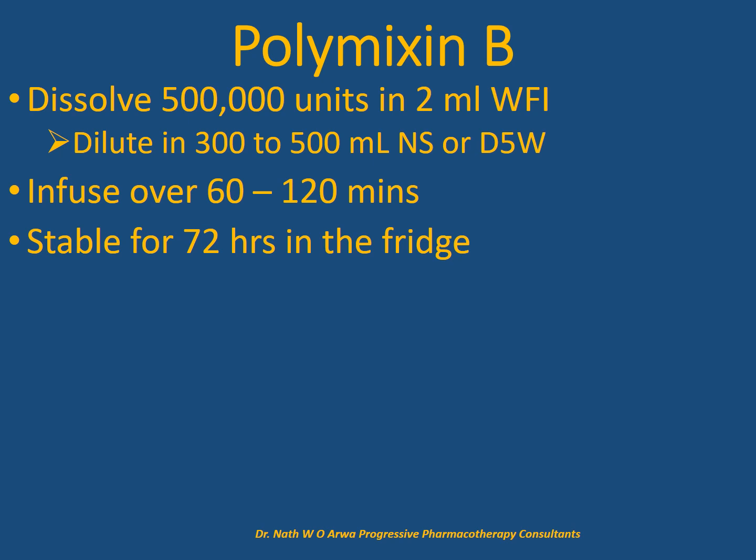For polymyxin B, dissolve 500,000 international units in 2 ml of water for injection, then dilute the prescribed dose in 300 to 500 ml of normal saline or dextrose 5%. The final solution should be infused over 1 to 2 hours, and such solutions remain stable in the fridge for 3 days.